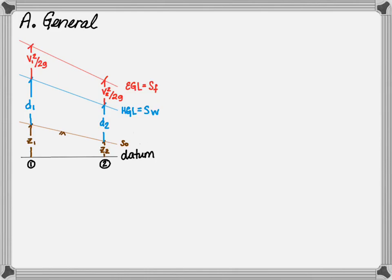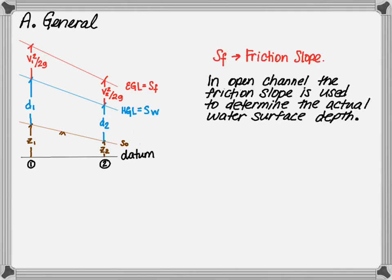Finally, the velocity head is defined as the velocity squared divided by two times gravity. The slope is referred to as the friction slope and is also known as the energy grade line or EGL. Note that the friction slope is essential in open channel hydraulics. The actual water surface, which may or may not be normal depth, is determined based on the friction slope.